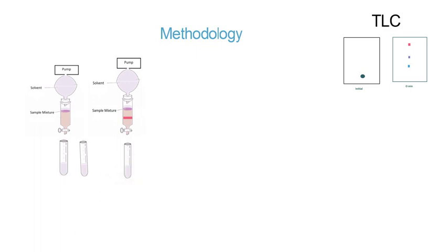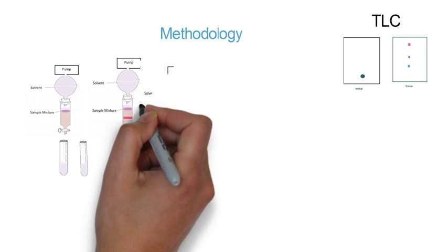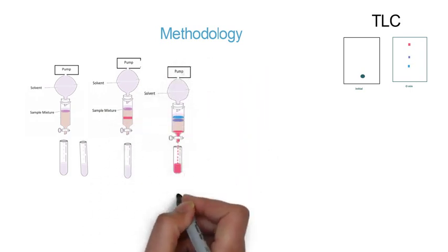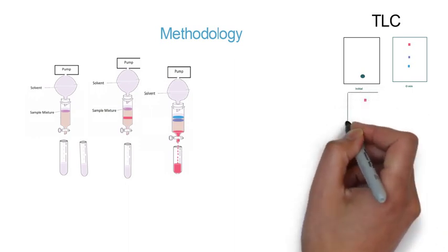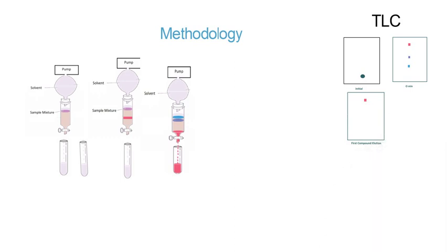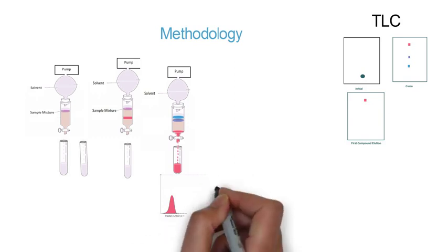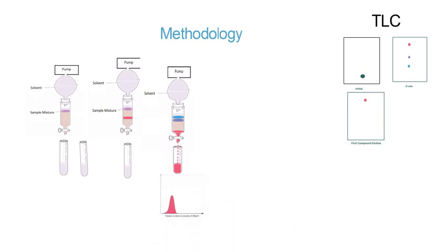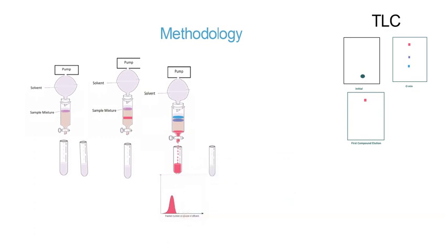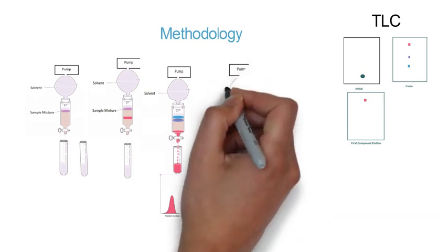From TLC, you can understand that TLC is against the gravity and column is with the gravity, so the compound which is having higher Rf will be separated firstly. Now the compound has been separated, so the red color test tube indicates that the compound having the highest Rf has been separated. Similarly, you can see the chromatogram given by HPLC, and you can see that the TLC of that particular test tube is showing the red color compound separately.